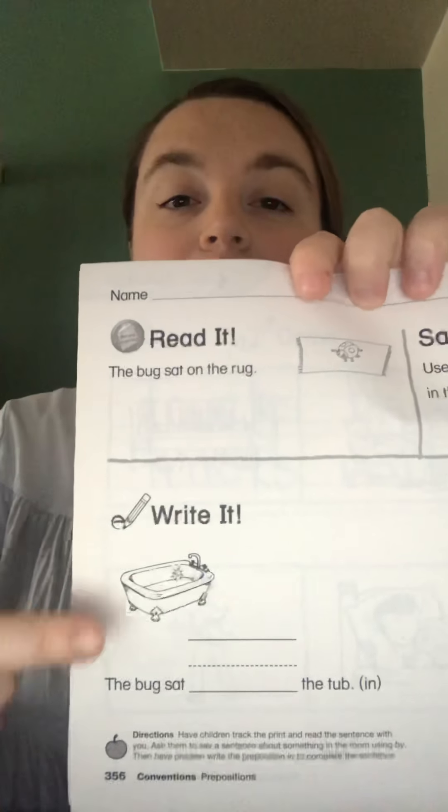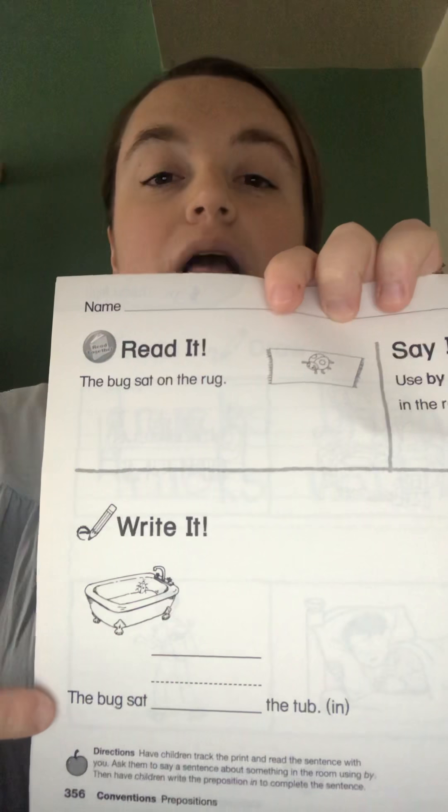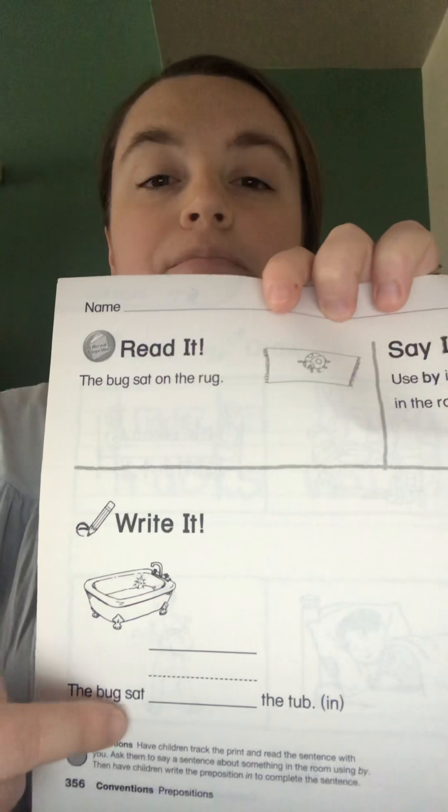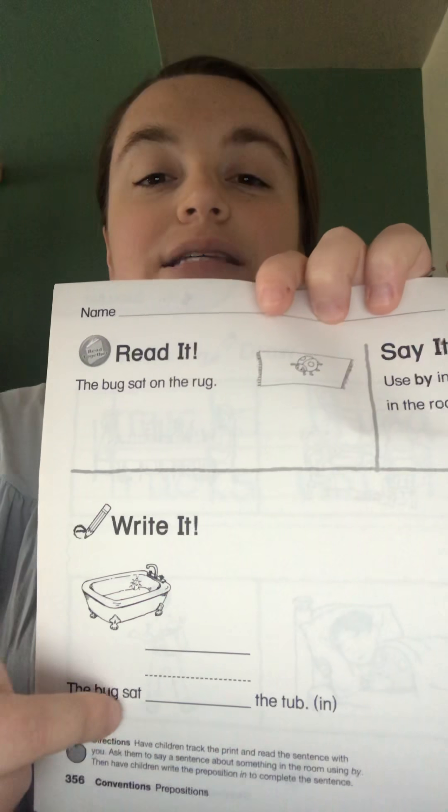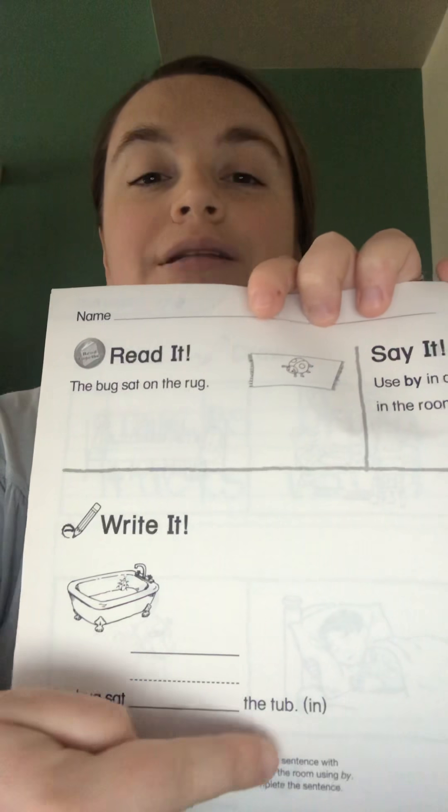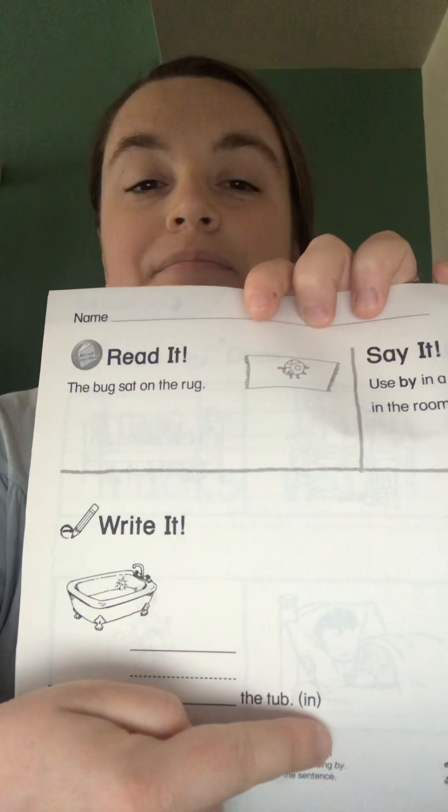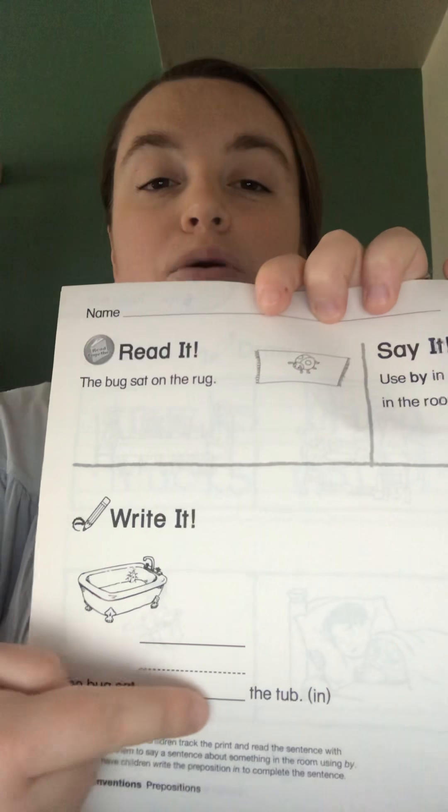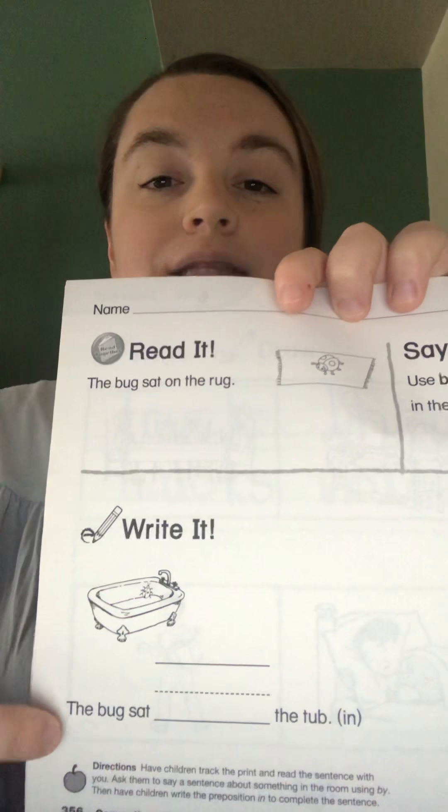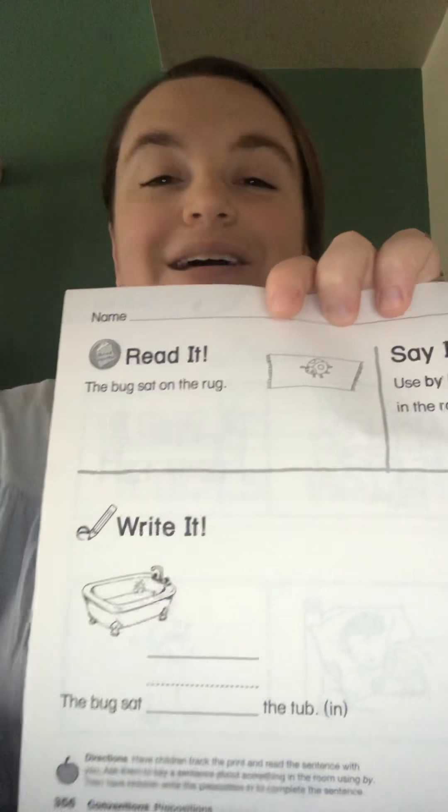Then come down to the bottom. Again, look at your picture for the clue. Read your sentence. The bug, bug, sat, sat, blank, in the tub. Take your word from your parenthesis. Put it here. I-N, both lowercase. That spells in, and read your whole sentence. The bug sat in the tub.